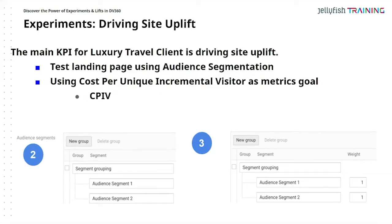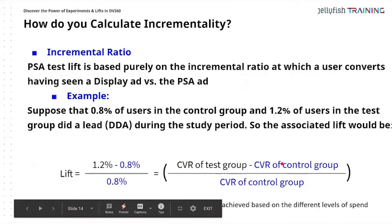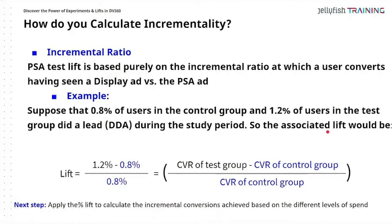How do you calculate incrementality? It uses a formula based purely on the incremental ratio at which a user converts — for example, if they've seen a regular display ad versus the PSA or charity test. Let's say 0.8% of users in the control group and 1.2% of users in the test group completed a lead using data-driven attribution during the study period. You apply the percentage of lift to calculate incremental conversions achieved based on different levels of spend. Thankfully, we have an analytics team who reviews this.